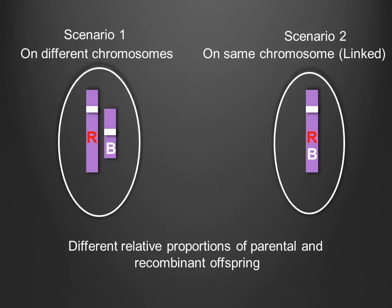The chromosomal arrangement of two genes — that is, whether they are linked or not linked — determines the relative proportion of parental and recombinant offspring. Therefore, by looking at the relative proportion of parental and recombinant offspring produced by a test cross, one can determine the chromosomal arrangement of the two genes.